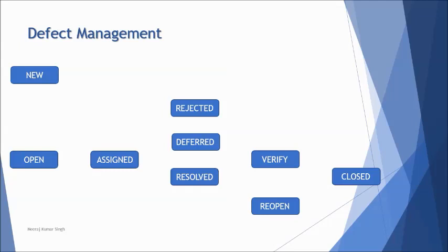Let's understand the defect tracking life cycle, or bug life cycle as it is commonly known in the corporate industry. These are the different states of a defect which travel from one state to another through various transitions. Generally, when a defect is found by the tester, it is reported with a status of 'New,' and the test manager is updated that a new defect has been found.